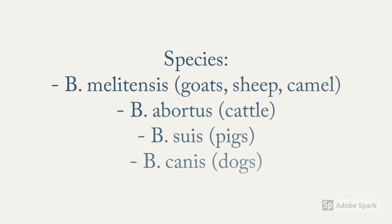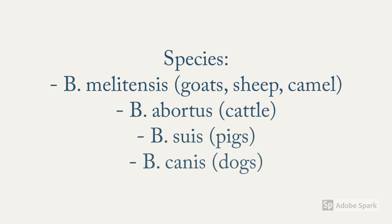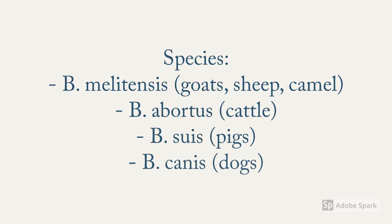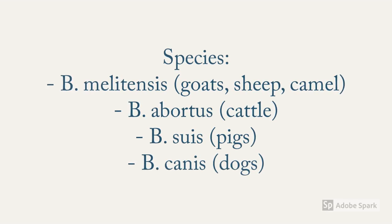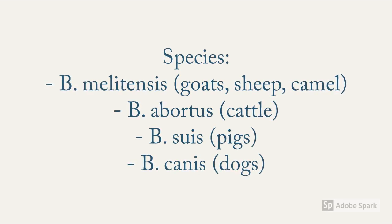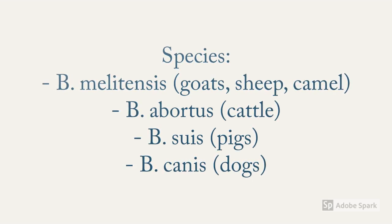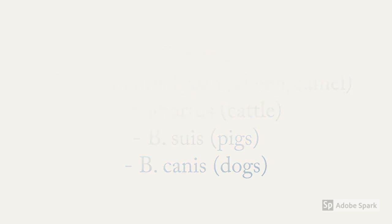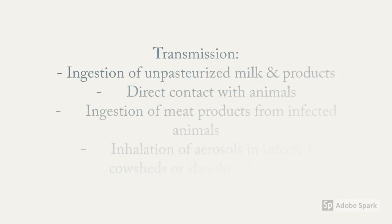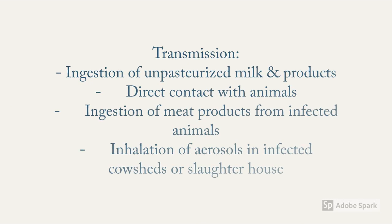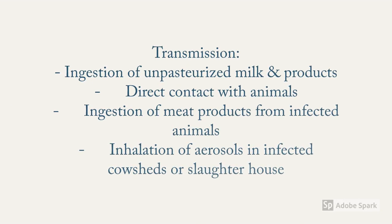There are four species of Brucella, each specific to a certain animal host: Brucella melitensis, Brucella abortus, Brucella suis, and Brucella canis. The term melitensis has been derived from the word 'melita,' which means Malta in Roman — the place from where brucellosis was first recognized.